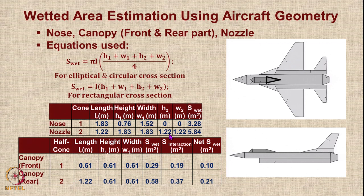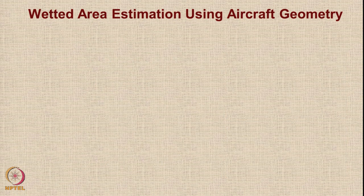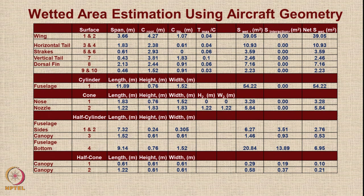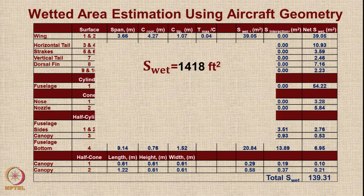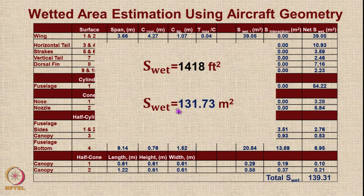Using these numbers, you can calculate the areas of all components. From the full table, the total adds up to 139.31 square meters. The quoted value of Swet is 1418 square feet (131.73 square meters when converted). Throughout the calculation, rounding off during feet-to-meters conversions introduced an error of approximately 8.5 in 130. We will proceed with 131.73 square meters to avoid introducing unnecessary errors.